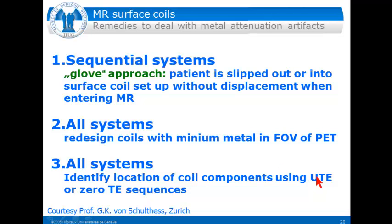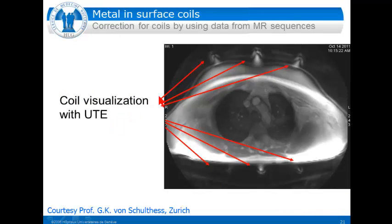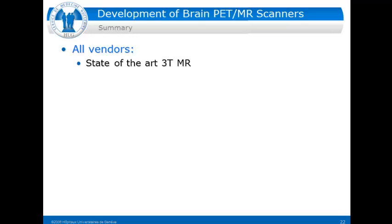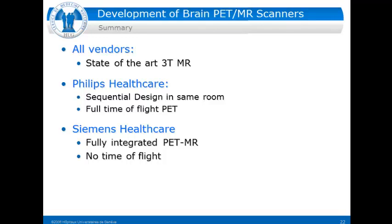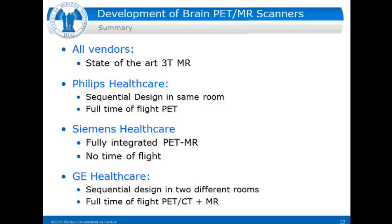In all systems, the location of coil components can be identified using UTE or zero-TE sequences. Here is one example of a UTE sequence on a chest: the MR of the chest is shown, the metal parts of the coils are visible, and once seen by the UTE they can be corrected for. In summary: all vendors use state-of-the-art three Tesla MR scanners. Philips has a sequential design in the same room allowing full time-of-flight PET. Siemens is currently the only vendor with a fully integrated PET-MR but without time-of-flight. GE has a sequential design in two rooms permitting full time-of-flight PET-CT and MR, though with two strictly distinct systems.